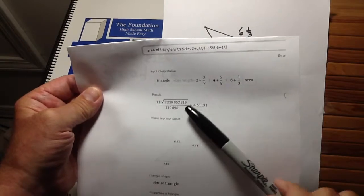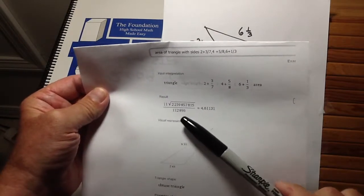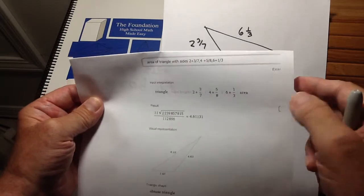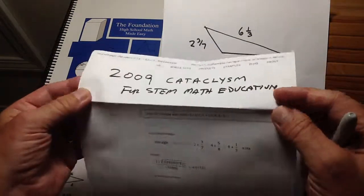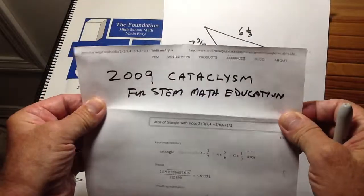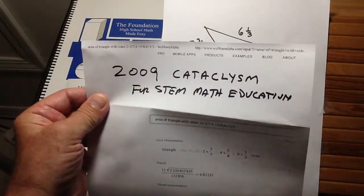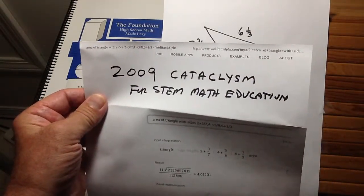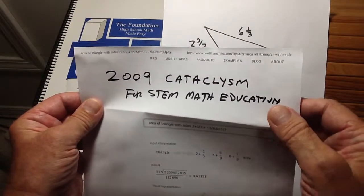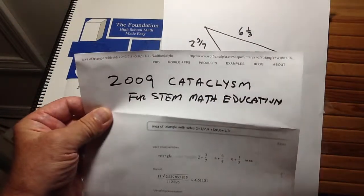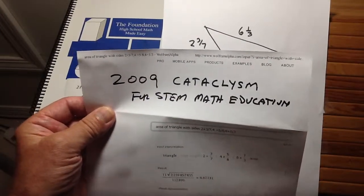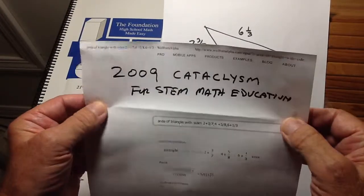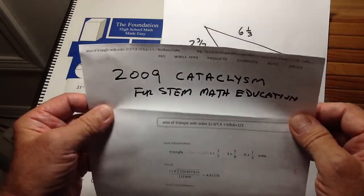And in fact, Wolfram Alpha uses something called Heron's formula to do it, which I think is more difficult to do manually. But Wolfram Alpha does it. Now, if you haven't heard of Wolfram Alpha, Wolfram Alpha is actually another cataclysm. In 2009, when Wolfram Alpha was introduced to the world, it became a cataclysm for STEM math education. Now, that's a very large subject, and I will explain that in depth to you on another video once we get acquainted.